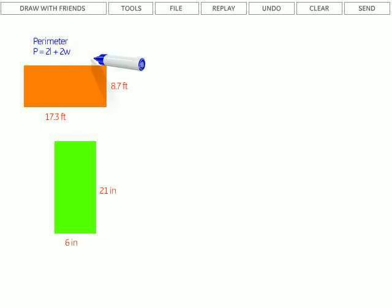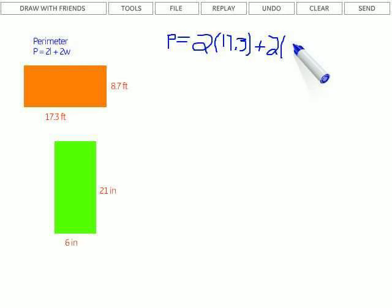So we're going to go ahead and fill that into our formula here. So we have P equals 2 times the length, which in this case is 17.3 feet, and then plus 2 times the width, and the width in this case is 8.7 feet.